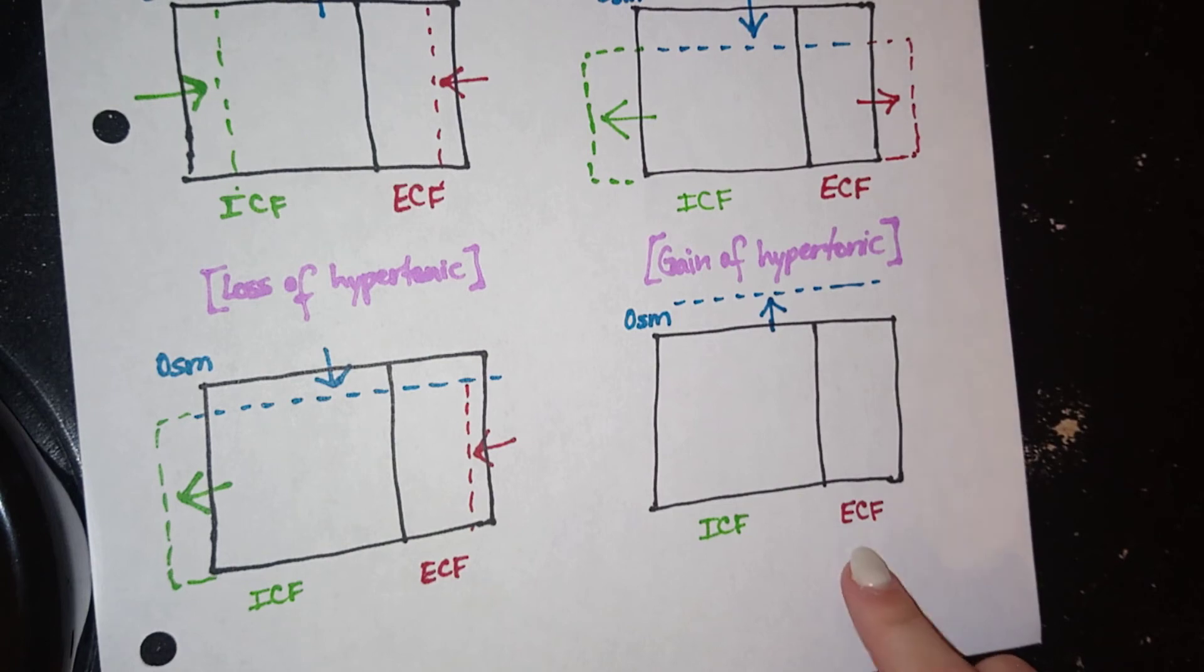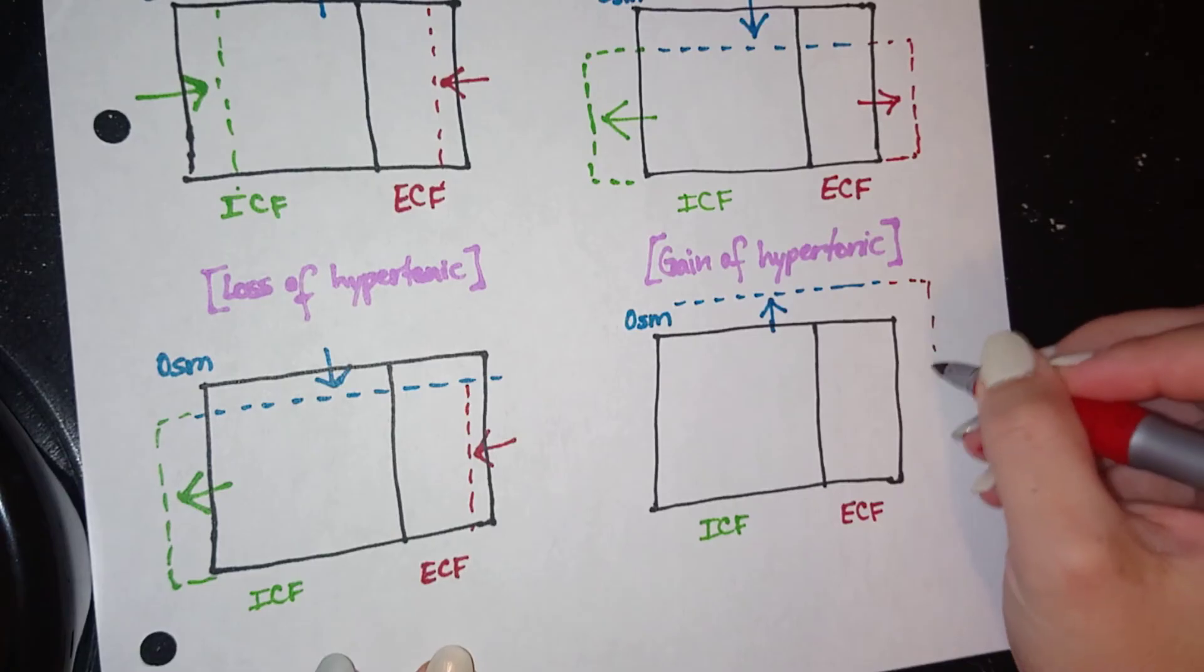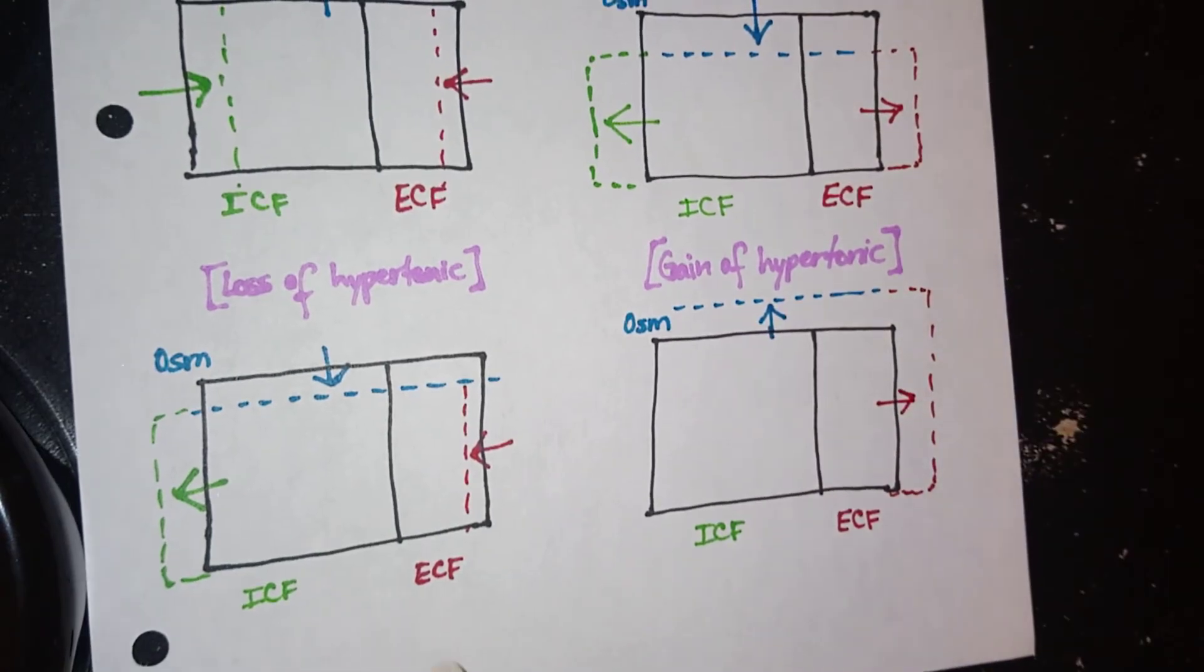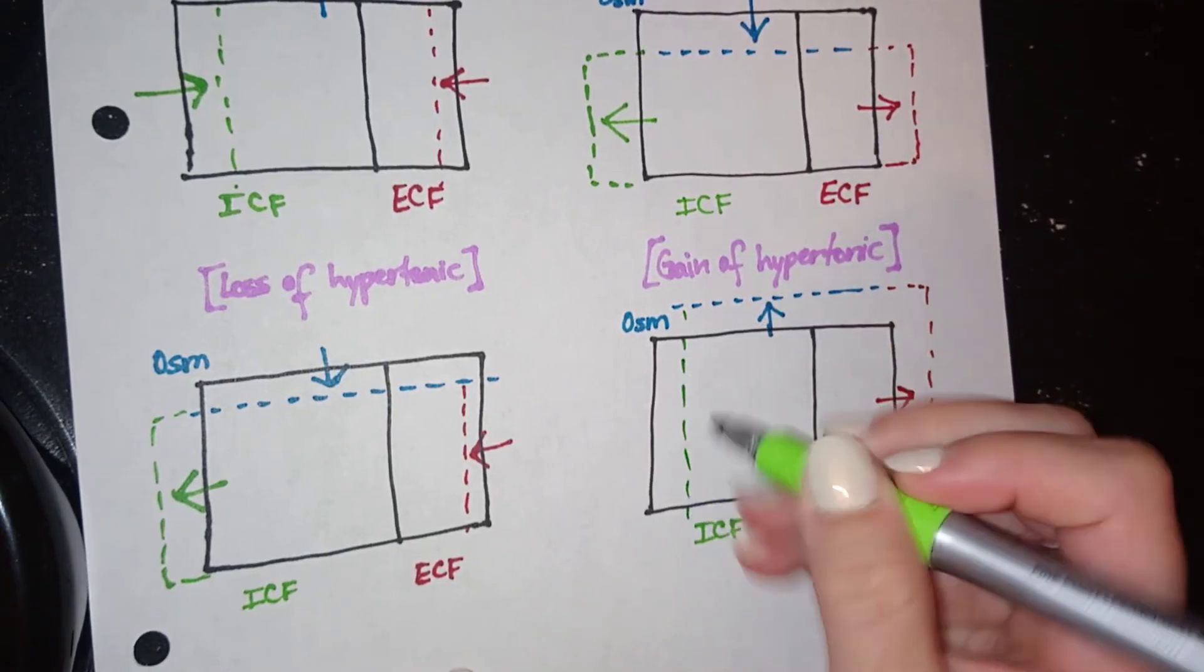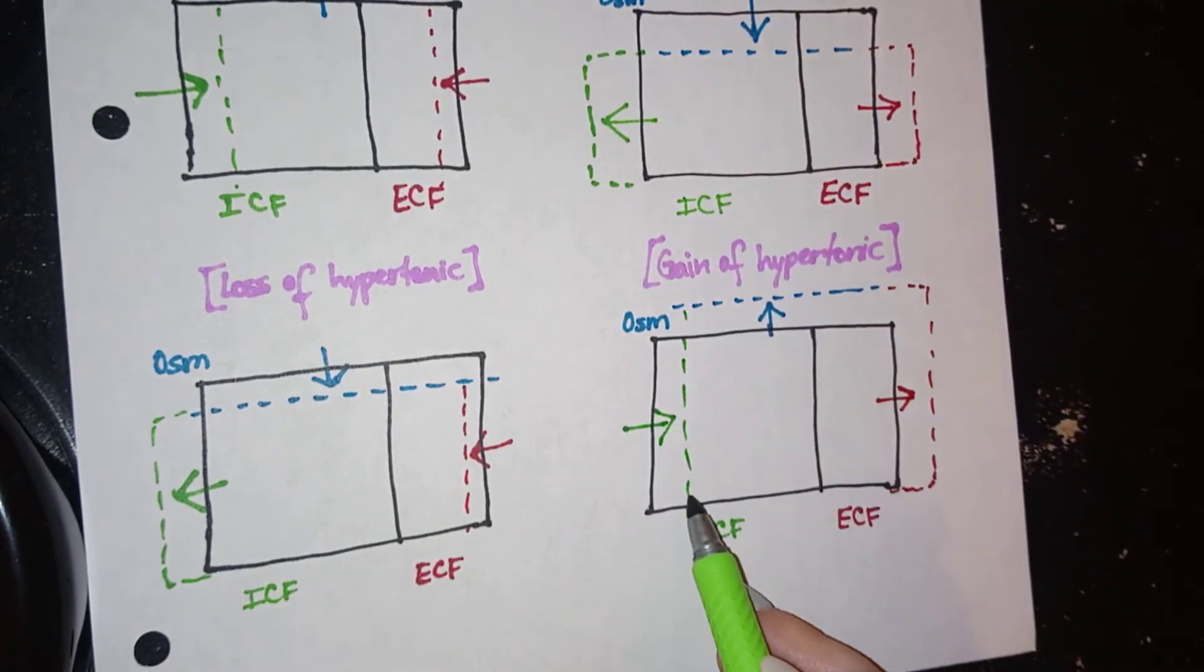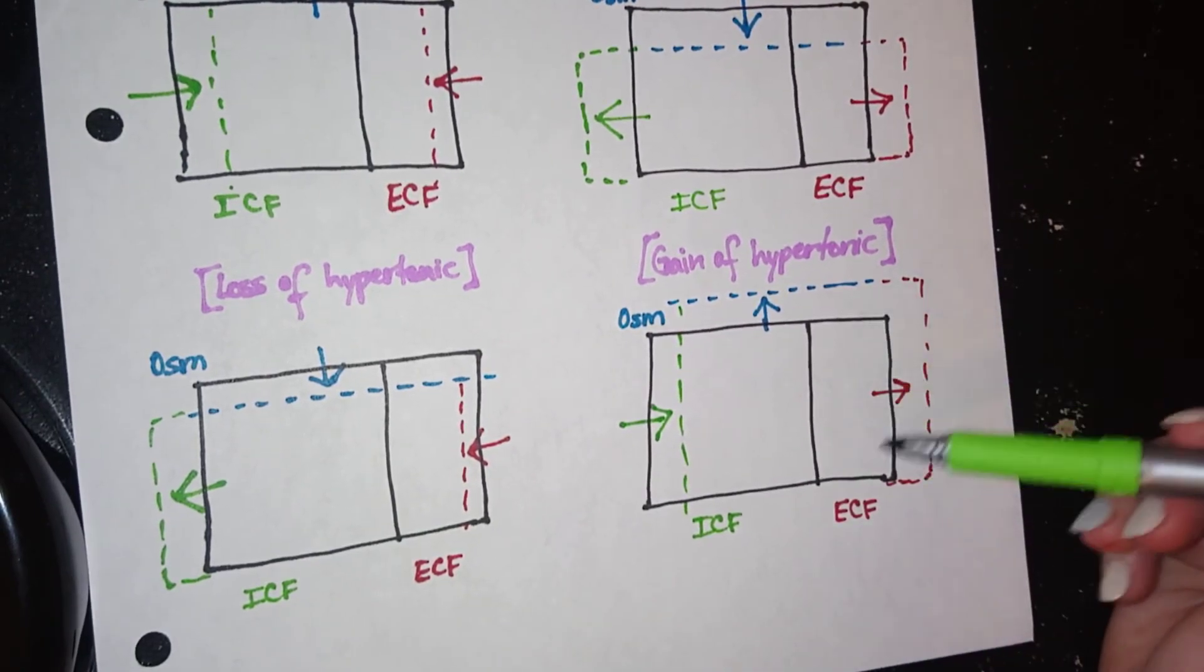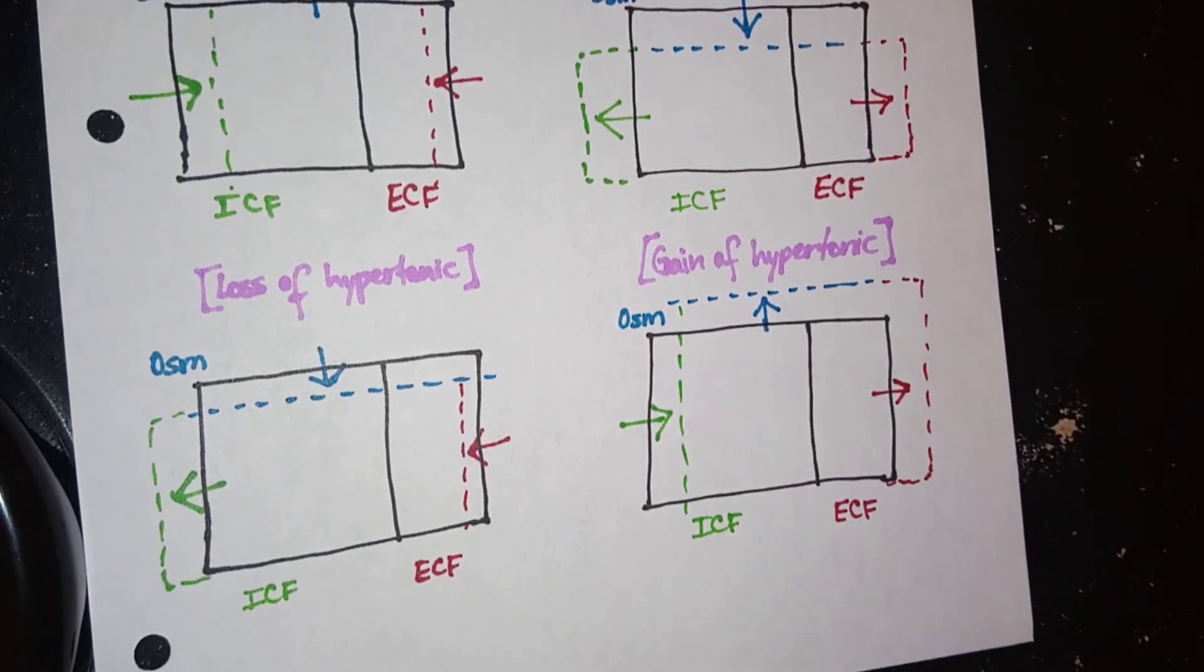Our ECF is going to need more water, right? So what it's going to do is, it's going to achieve getting all of that water, but at the cost of pulling it from the ICF. So the ICF will decrease, because it gave water to the ECF, so that the ECF can kind of balance out all of that excess salt.